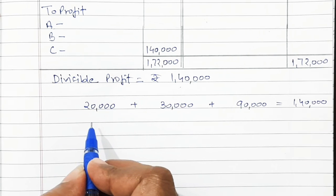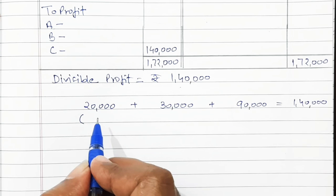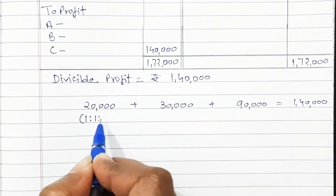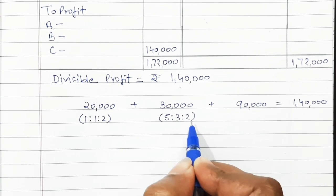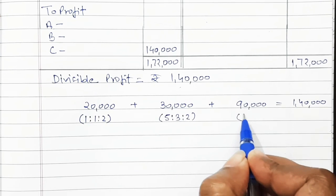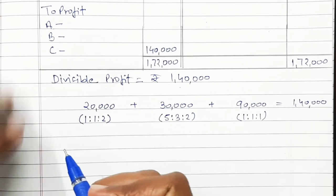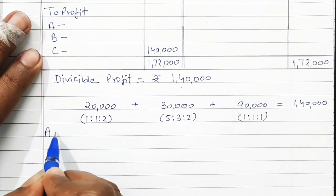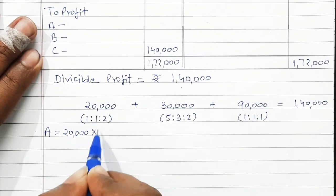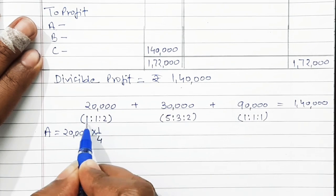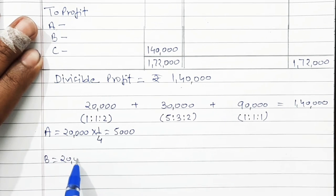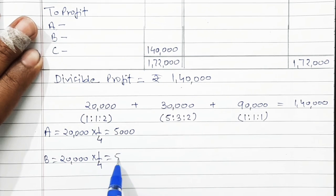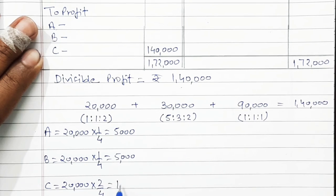Rs. 20,000 is distributed among partners in their capital ratio of Rs. 50,000 : Rs. 50,000 : Rs. 1,00,000, i.e., 1:1:2. For A: 20,000 × 1/4 = Rs. 5,000. For B: 20,000 × 1/4 = Rs. 5,000. For C: 20,000 × 2/4 = Rs. 10,000.